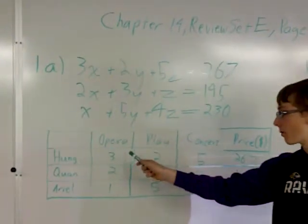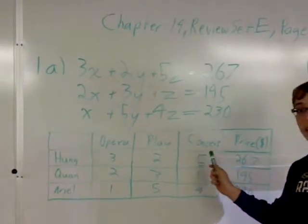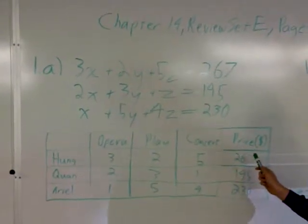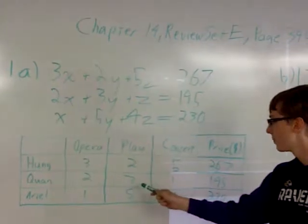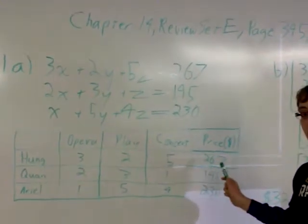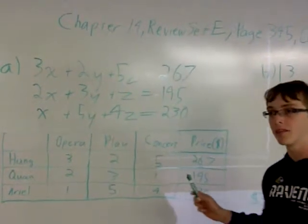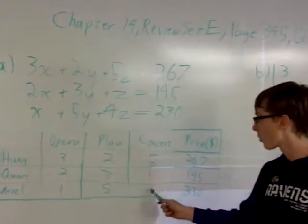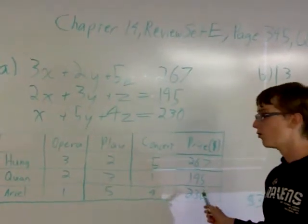Hung went to three operas, two plays, and five concerts, and paid a total of $267 in ticket prices. Kwon went to two operas, three plays, and one concert, and paid a total of $145. And Ariel went to one opera, five plays, and four concerts for a total of $230.